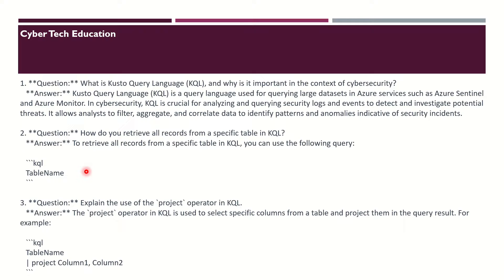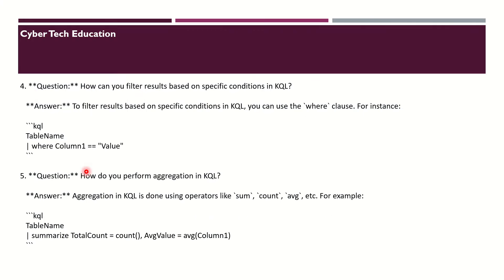The project operator in KQL is used to specify a specific set of columns from a table and project them in the query result. For example: TableName | project Column1, Column2.